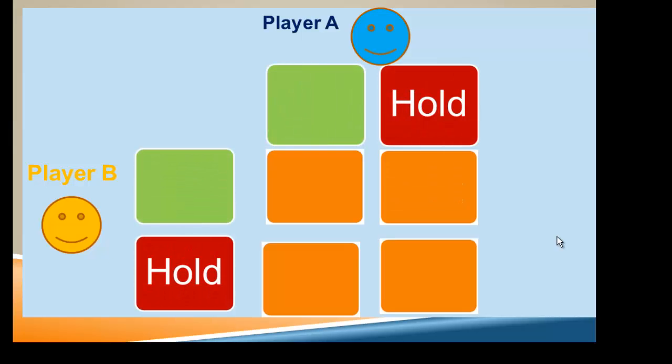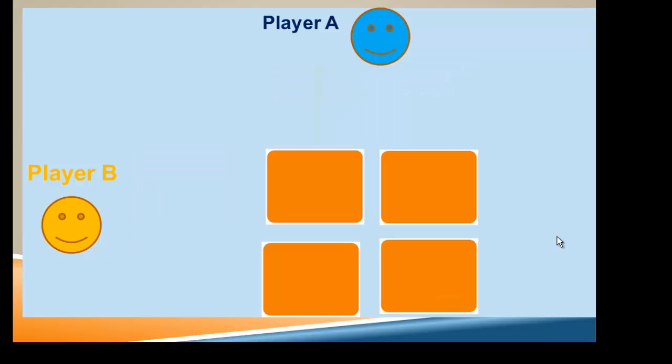Let's play a third hand. This time B holds and A holds as well. Now they both get just one point. A is still ahead, but they're kind of closing in on each other.